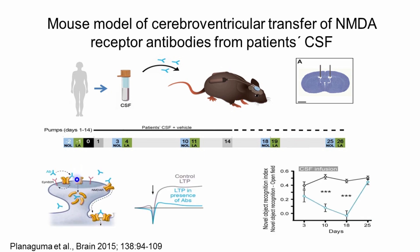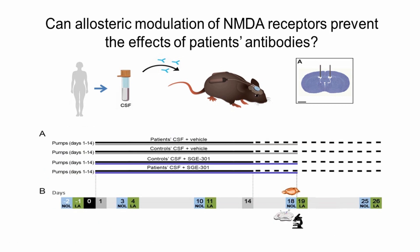Using this model, patients' antibodies cause a reversible internalization of NMDAR receptors associated with a decrease of long-term potentiation and also a severe decrease of memory function. Therefore, we used this model in four different groups of animals: animals that receive patient CSF or control CSF, with or without the drug, and these animals were tested behaviorally for memory and other measures over 26 days.